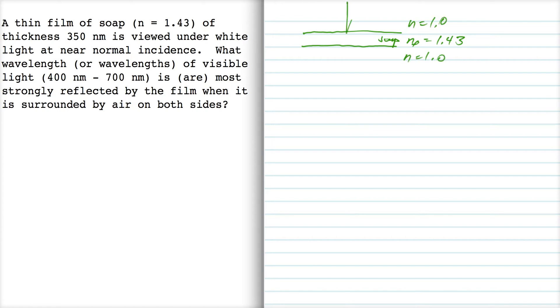Okay, so light comes in like this and wave A reflects and then wave B reflects and those are the only two waves we're interested in.